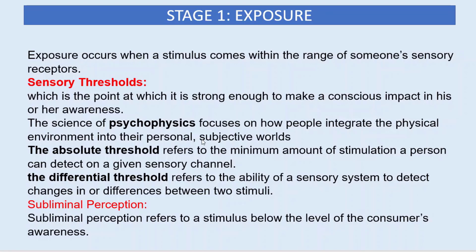Differential threshold refers to the ability of a sensory system to detect changes or differences between two stimuli. For example, Pepsi's color logo changed slowly from 1898 to 2009. Subliminal perception refers to a stimulus below the level of consumer awareness.